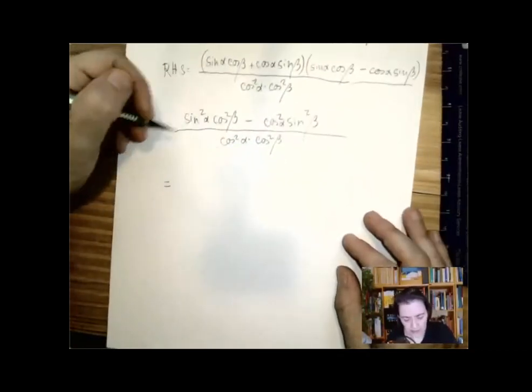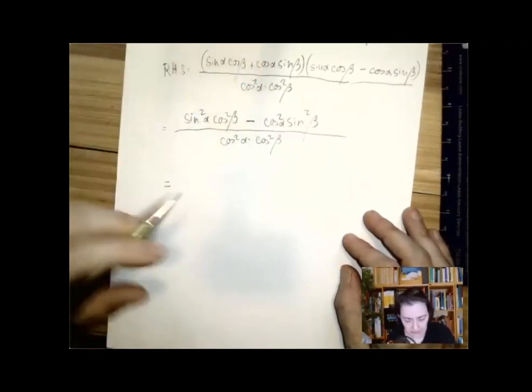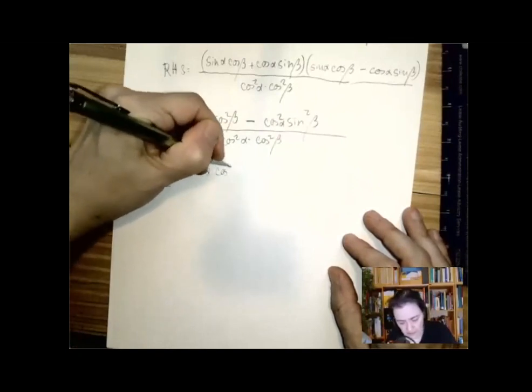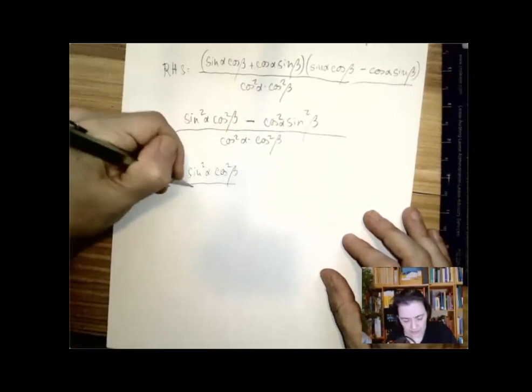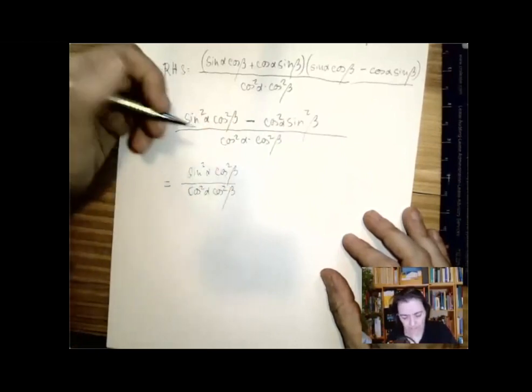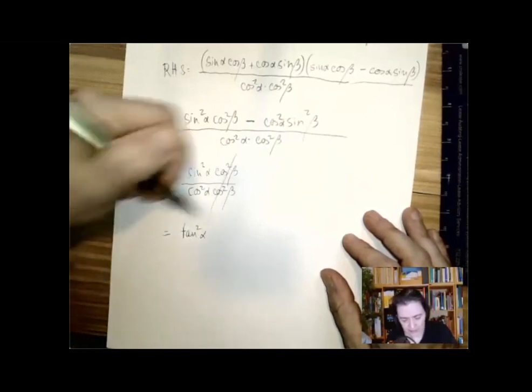And we can separate this difference by the numerator. So we can say sine squared alpha cosine squared beta, which is, by the way, tangent squared alpha. So it looks like we're there,